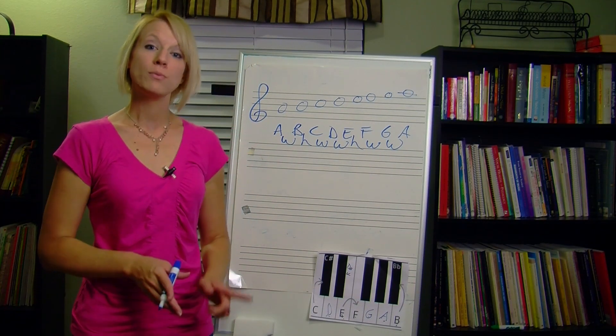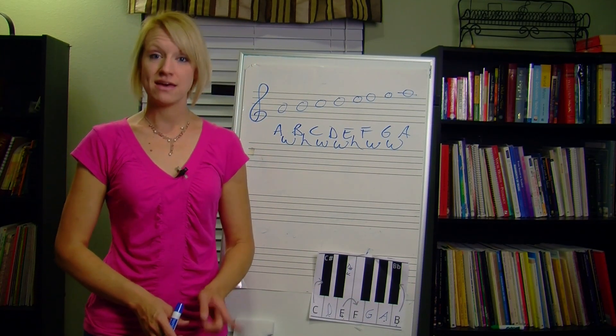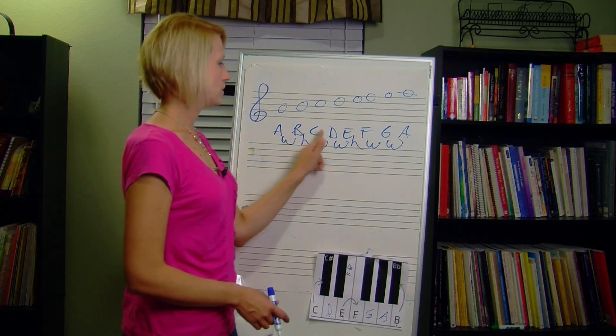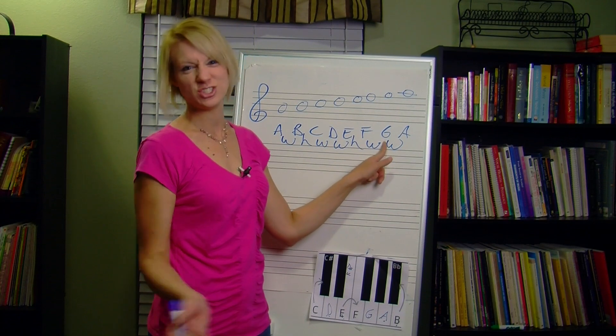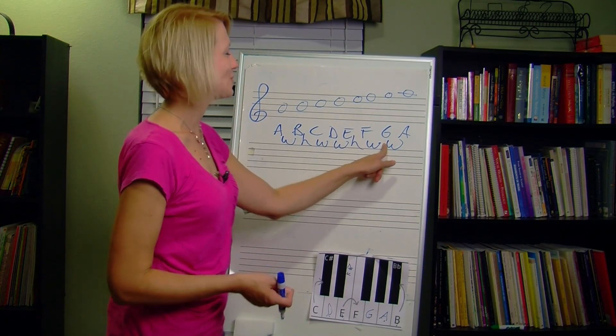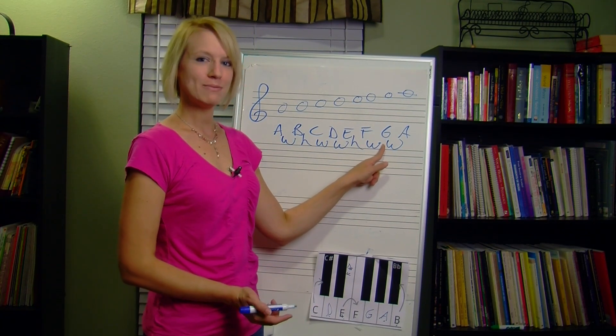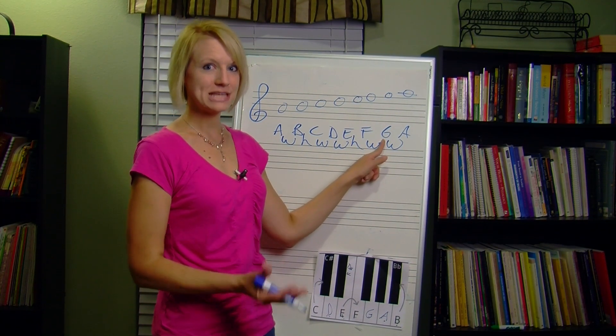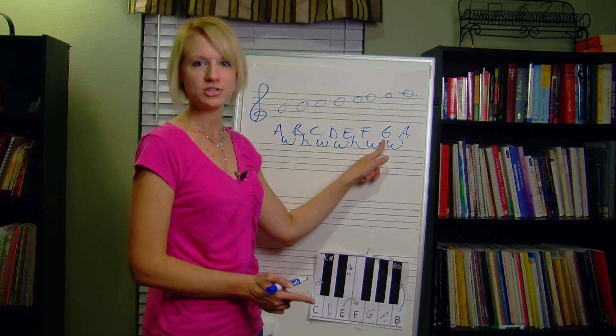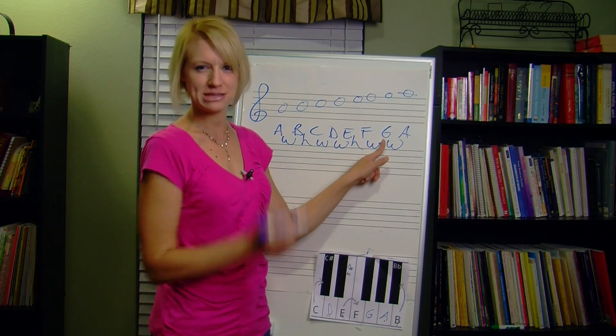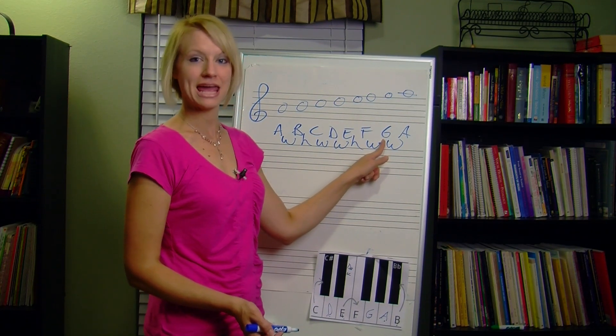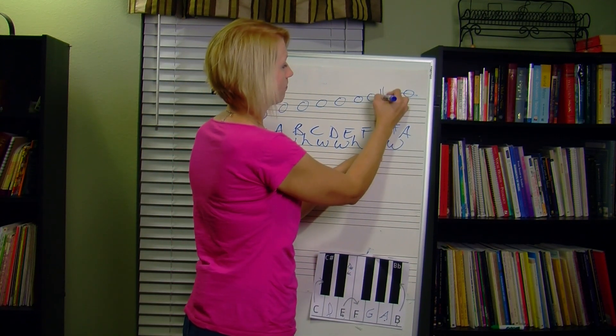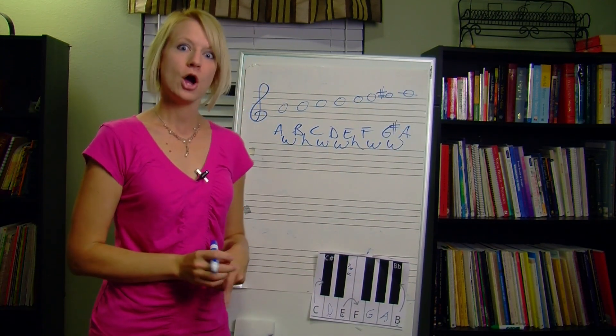To make this harmonic minor, you raise the seventh scale degree by a half step. One, two, three, four, five, six, seven - just the second to last one, so you don't always have to count to seven. Raise it by a half step. Since this is just a plain old G, how do I raise that by a half step? Remember, we can't change this to a different letter. It has to be a G something. I'm going to just add a sharp. And that's it. We've created harmonic minor.